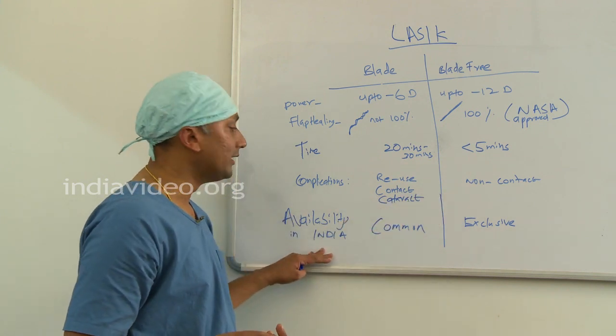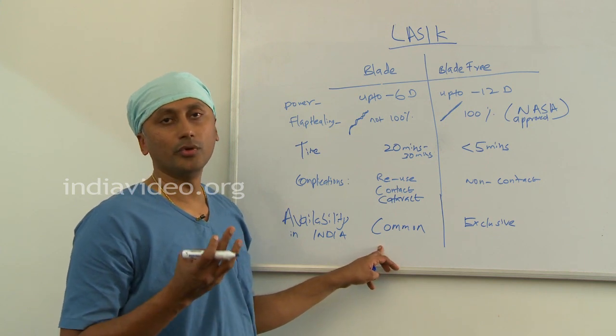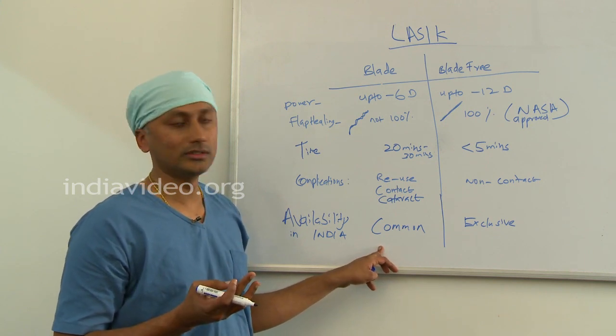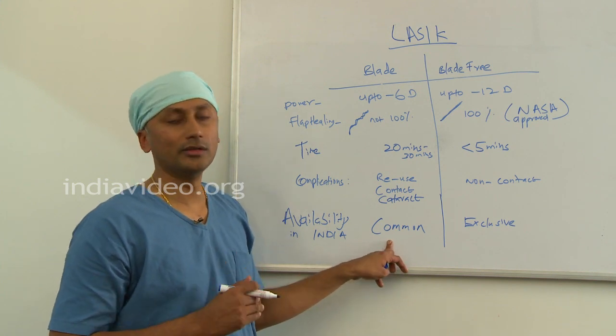The availability in India: the blade assisted LASIK is very common because it is cheap to procure for the institution, less than 2 crores. It is cheap to perform, around 20,000 to 25,000 rupees.